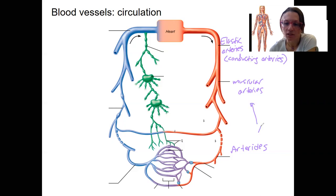So both of these allow for vasodilation and vasoconstriction, so that smooth muscle is going to be important for regulating blood pressure.